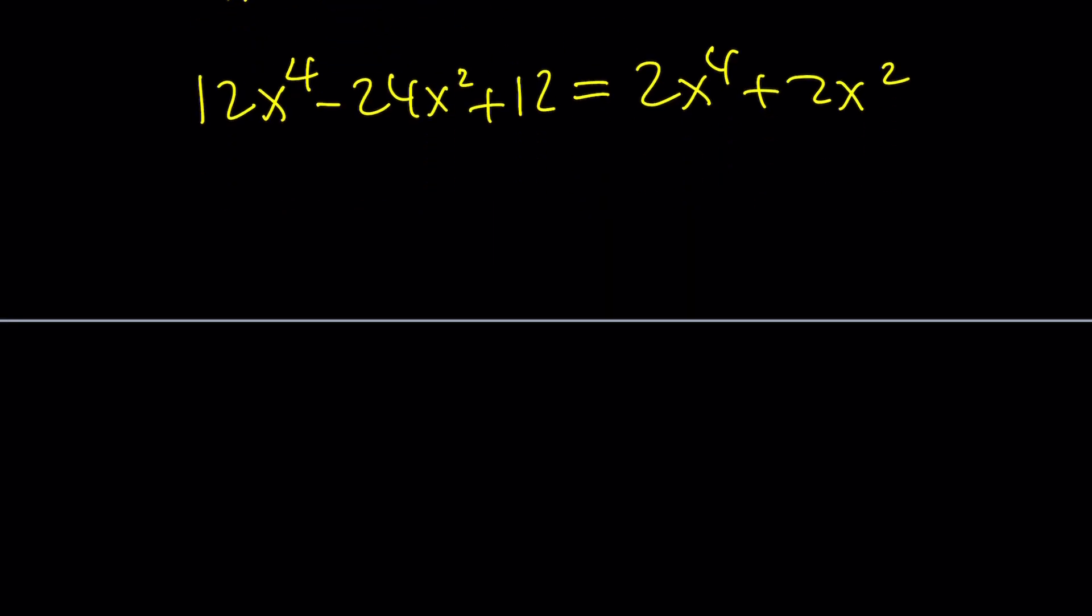And then let's put this on the left. 10x to the fourth, bring that over as well. Minus 26x squared plus 12 equals 0. Even though I wasn't sure if this is going to end up being a nice quartic, it ended up being a nice quartic. And one of the nicest ones, I should say, a biquartic.